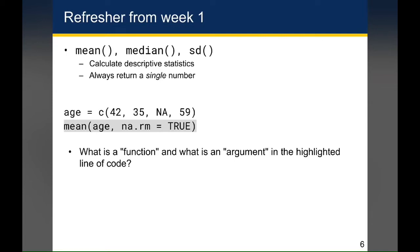I'll be using the term 'function argument,' and since this is not a programming course, I want to explain quickly what I mean. Let's take a look at these two lines of code. In the first line, I define age as a numeric vector with the ages 42, 35, NA — which is a missing value — and 59. Then, in order to calculate the mean, I have to tell the mean function to ignore the NA values by specifying na.rm equals TRUE, which effectively removes the missing values before calculating the mean. So in that highlighted line of code, what is the function and what is the argument?